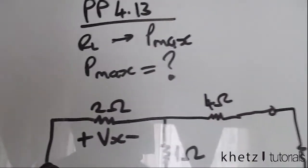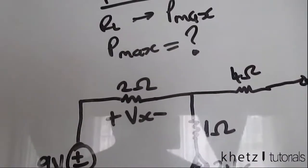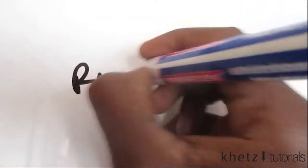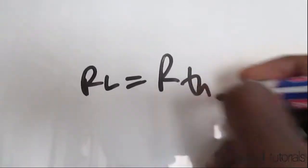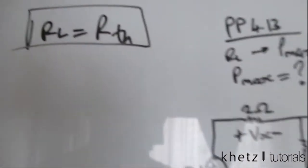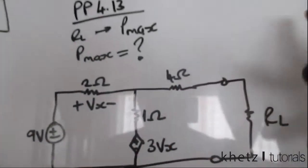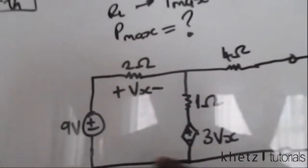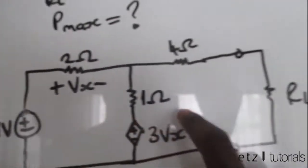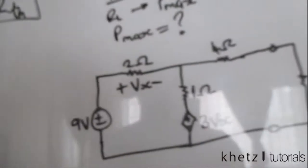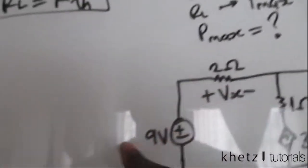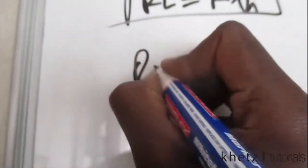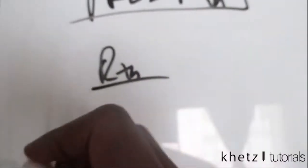For maximum power, R_L has to be equal to R_th. So we're essentially going to find R_th. To do that, we turn off any independent sources and leave the dependent sources intact. We only have one independent source and one dependent source.